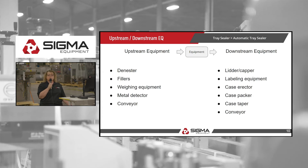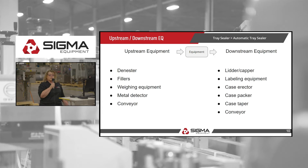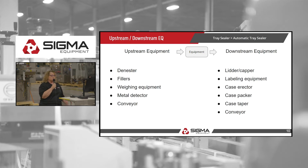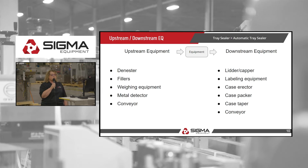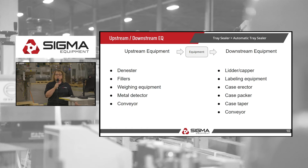For upstream and downstream equipment, it depends on the production line and product being produced, but you could probably find denesters, fillers, and weighing equipment upstream. Conveyor would be on both sides, and downstream you'd find lidding or capping equipment, labeling equipment, and case tapers — that sort of thing.